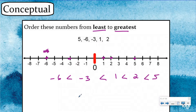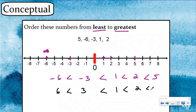Now using a different color, I'm going to show the absolute value of each of these numbers underneath. The absolute value of negative six would be six. The absolute value of negative three would be three. The absolute value of one would be one. The absolute value of two would be two, and the absolute value of five would be five. The absolute value is how far they are away from zero. So my purple inequality statement is comparing the values, and my black inequality statement is comparing the absolute values.